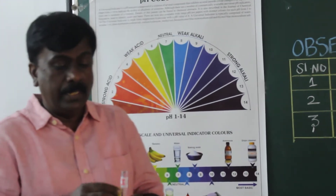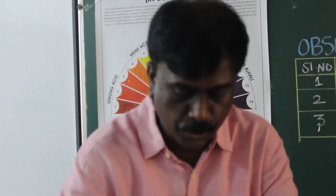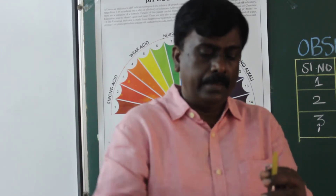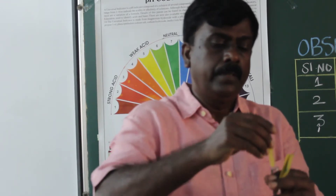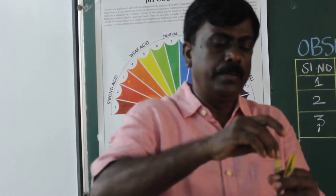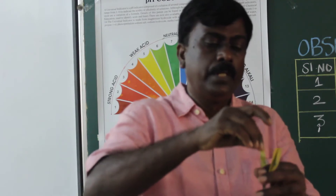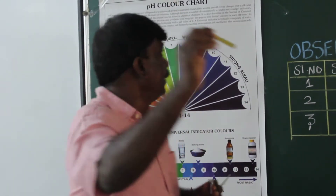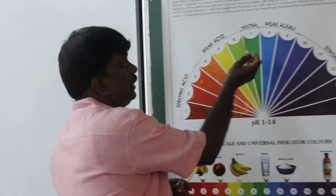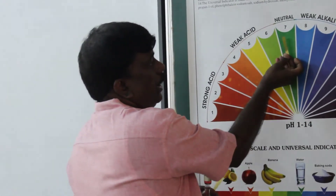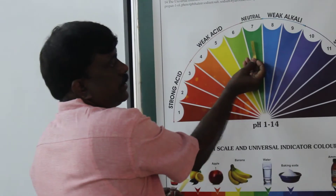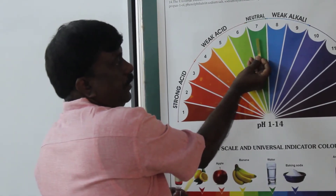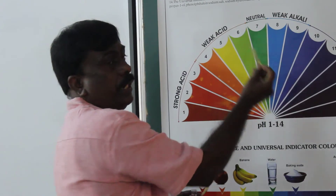Now take the third test tube and dip the pH paper into it. You can see a green color which has to be compared with the chart. The green color matches with pH 7, and thereby we can understand it is neutral.